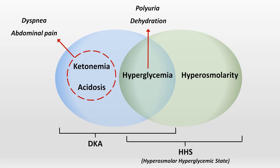Meanwhile, with HHS, the hyperosmolarity leads to confusion and somnolence. In cases where DKA is associated with significant hyperosmolarity and altered mentation, it may be appropriate to state that both DKA and HHS are present simultaneously. On the other hand, if a person with DKA is confused or somnolent but serum osmolarity is normal or near-normal, the altered mentation is likely due to the acidemia or dehydration, and claiming the presence of HHS would be incorrect.